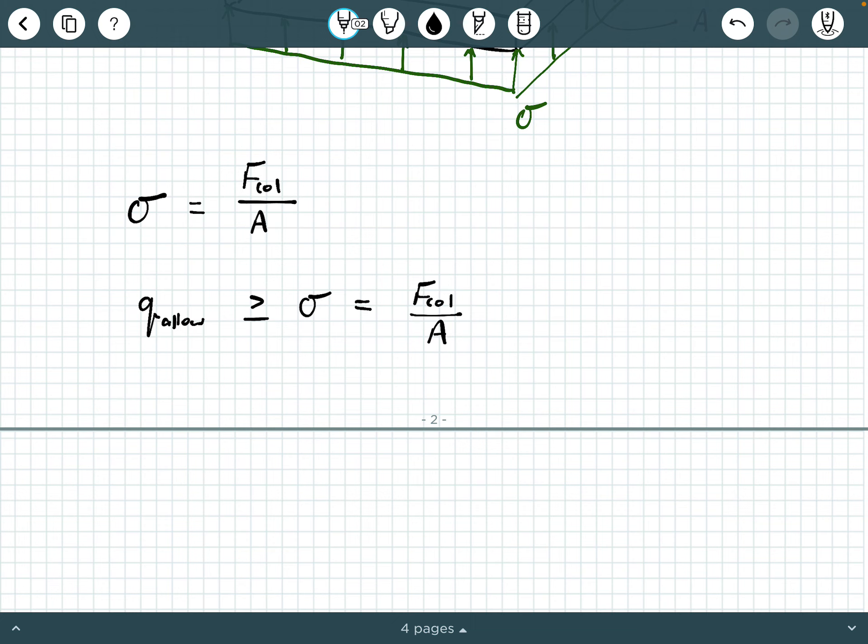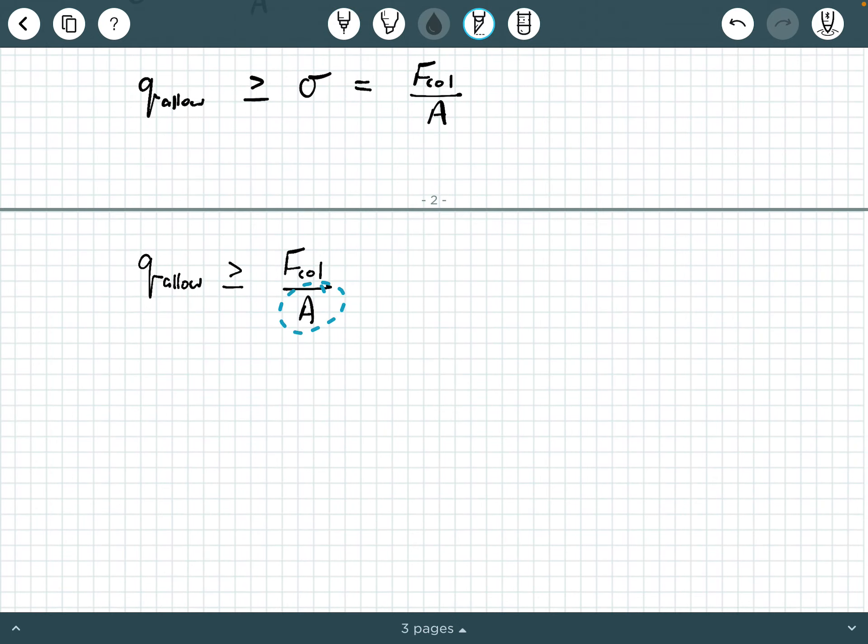So if you want to solve or design the plan dimensions, which really come from the plan area of the base of the footing, you say Q allow is bigger than or equal to F call divided by plan area. And then you can rearrange and solve for the plan area. So your area of the base of the footing must be bigger than or equal to F call divided by Q allow. And then from there, we can use that area we just solved for to calculate required plan dimensions.